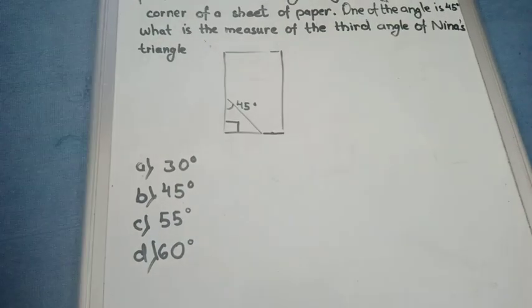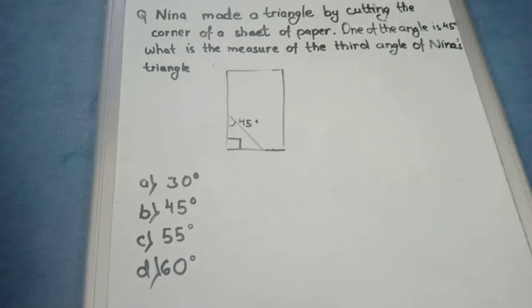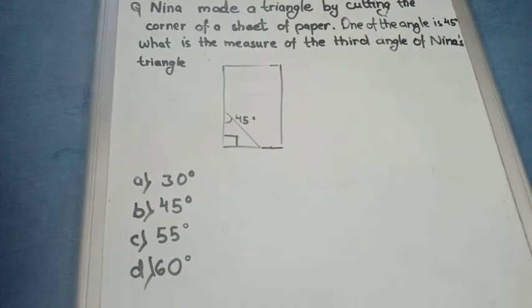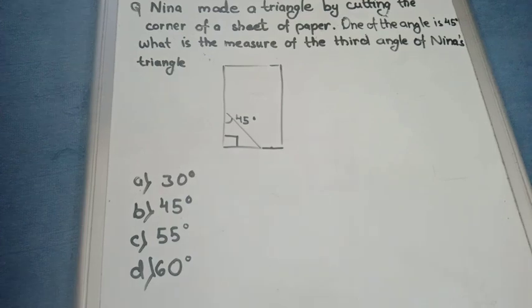Option A, 30 degrees. Option B, 45 degrees. Option C, 55 degrees. And Option D, 60 degrees.